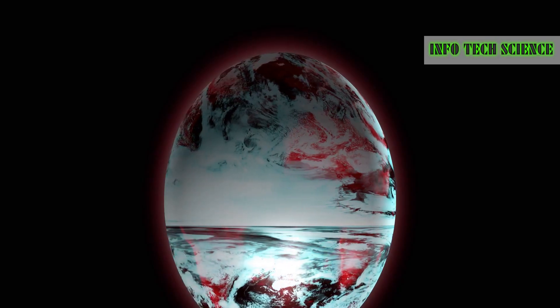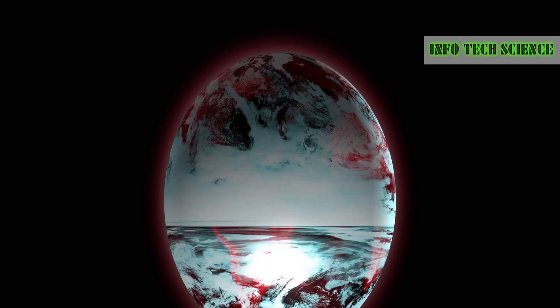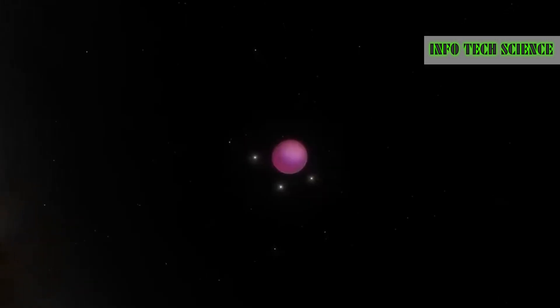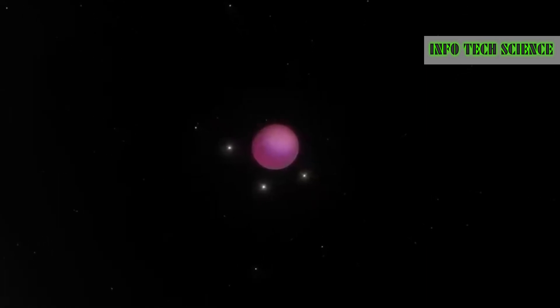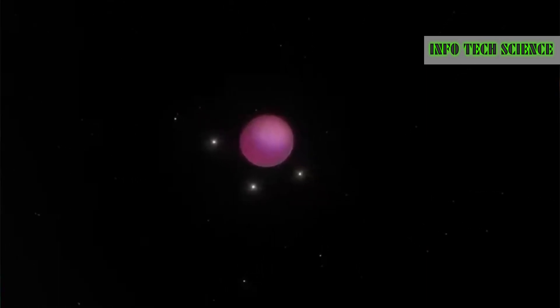For example, people once dreamed of finding El Dorado, a city filled with gold and jewels. They would be amazed to learn about a distant planet made entirely of diamonds. This planet, five times larger than Earth and located 4,000 light years away, is believed to be made of carbon.